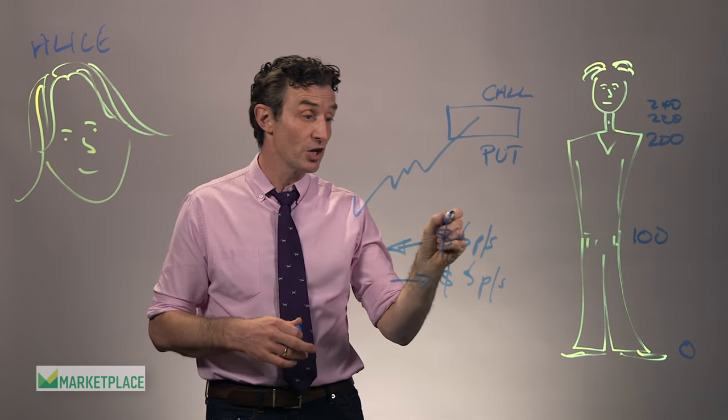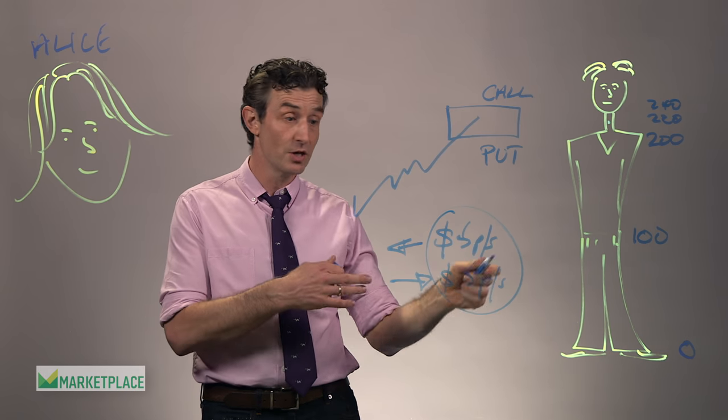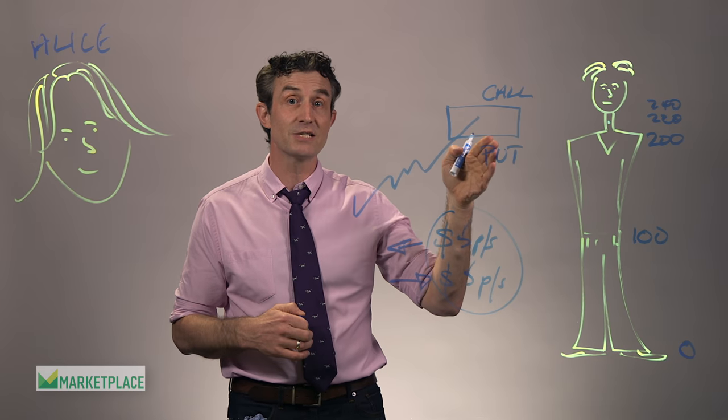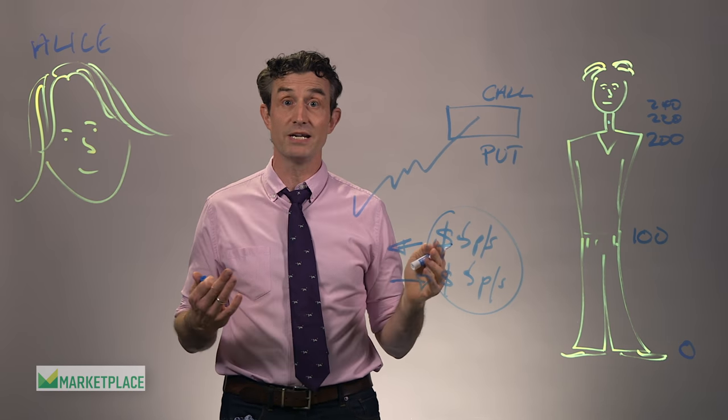So what Alice has done here is cost free. There's no cost to her because of this exchange of money here. Cost free, she has protected her investment from falling below two hundred dollars a share. Pretty neat.